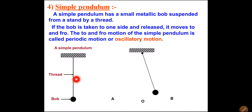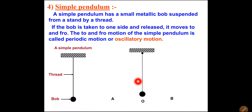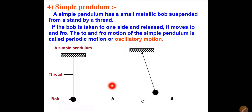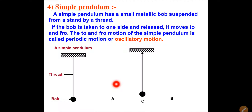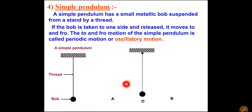Together these parts are called a simple pendulum. If the bob is taken to one side and released, it moves to and fro. The to-and-fro motion of the simple pendulum is called periodic motion or oscillatory motion. The bob continuously moves from point A to point O to point B, then back from B to O and O to A. This back-and-forth motion is called oscillatory motion.